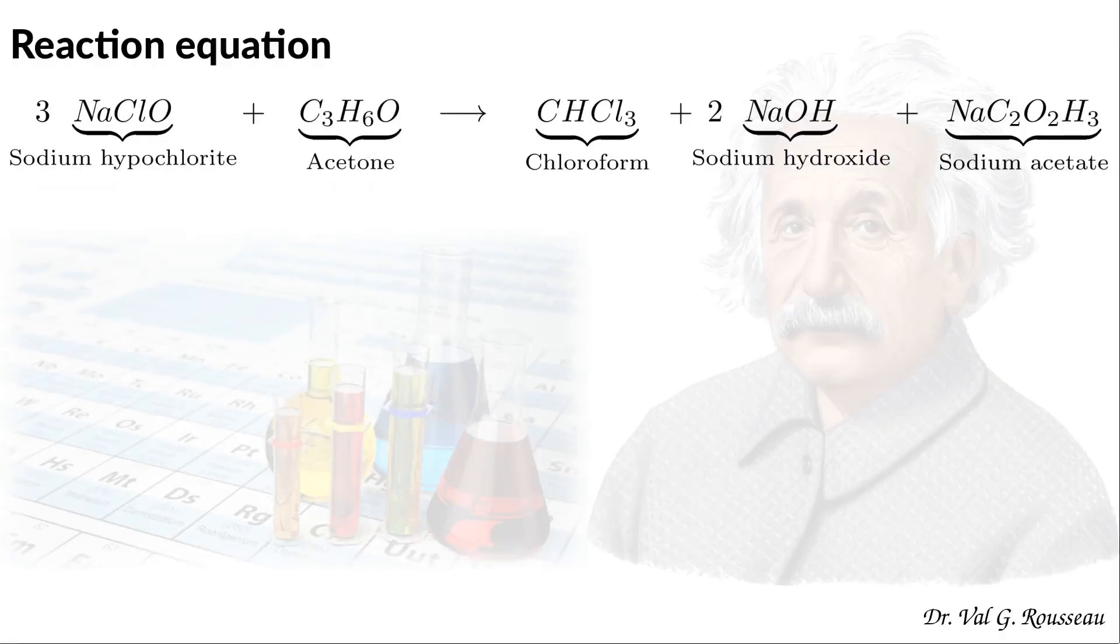Three moles of sodium hypochlorite react with one mole of acetone to give one mole of chloroform, two moles of sodium hydroxide, and one mole of sodium acetate.